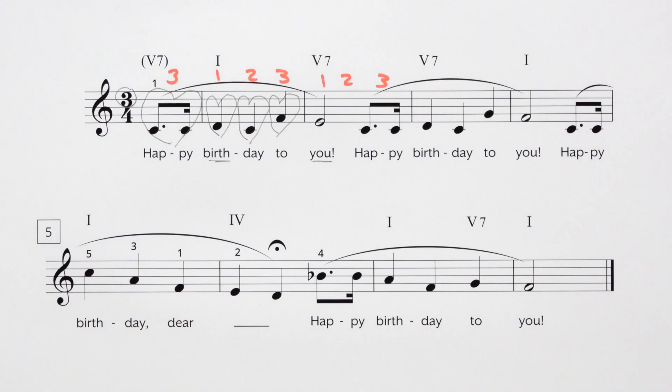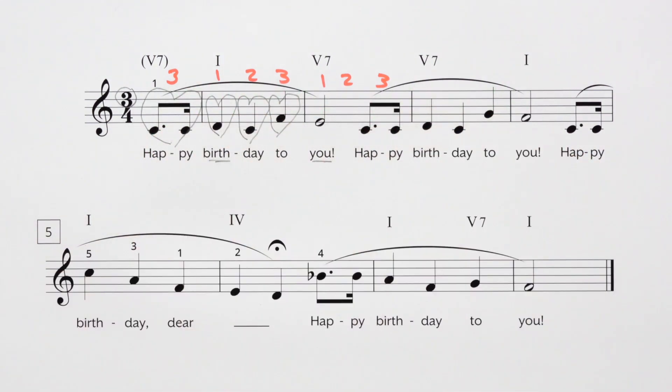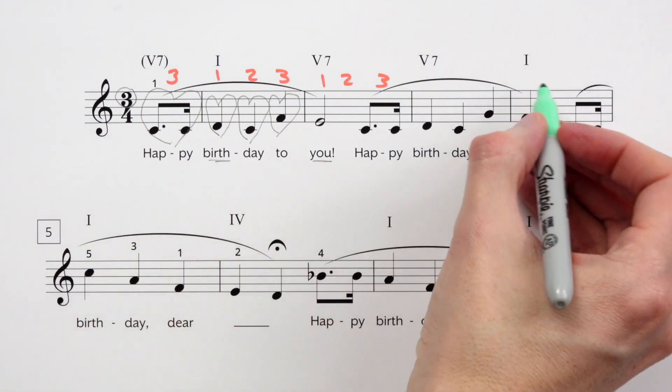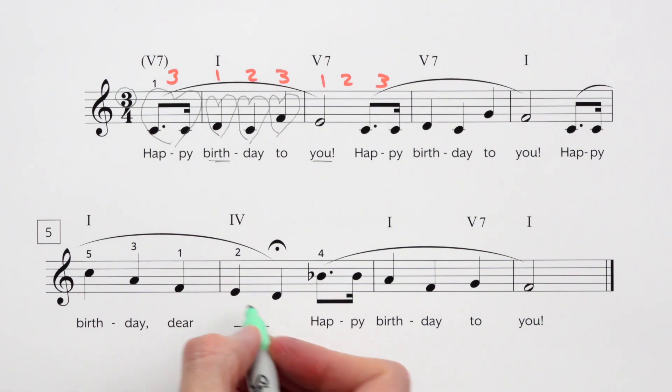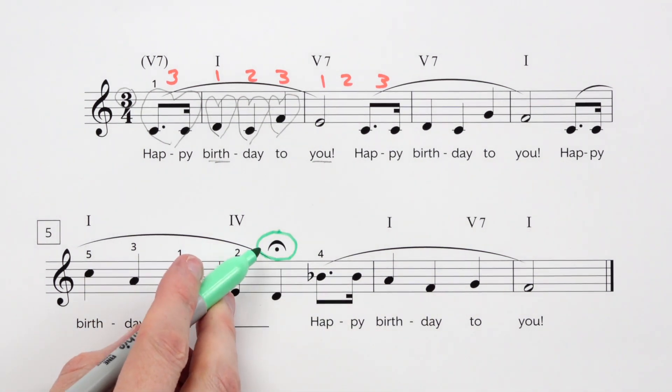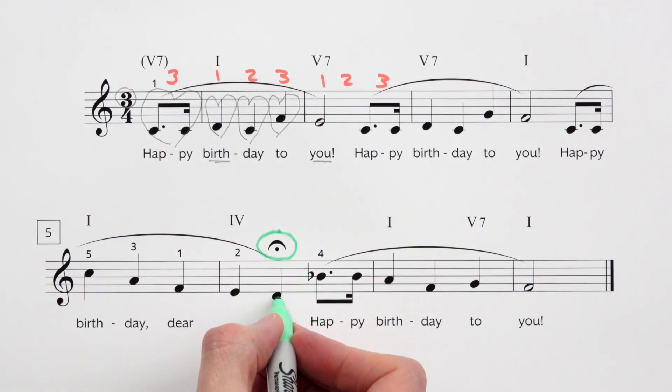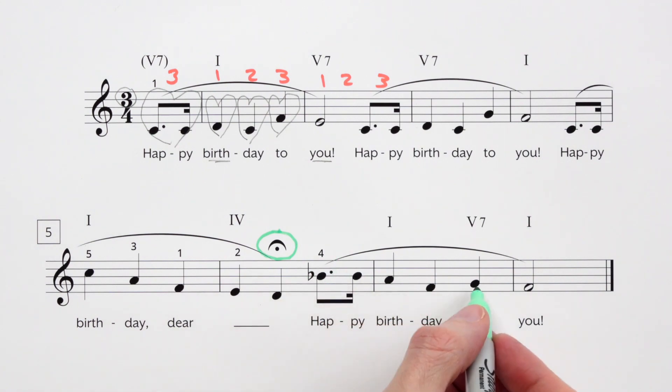Now before we try to play it, anything else you notice? You might have noticed these slur or phrase marks. This phrase mark goes off the edge because we're starting a new phrase, happy. See it goes off the edge, continues on this line, happy birthday dear, and then you can fill in the blank here. Whoever's birthday it is, dear Sarah. And what do we have here? It's our fermata. Remember we like to hold this note extra long. Happy birthday dear Sarah. You hold that extra long, and then we start a new phrase for the end. Happy birthday to you.